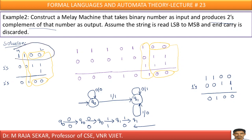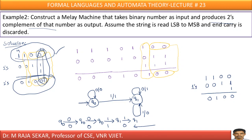Let me take a given binary number. How will you find its two's complement? If you read from least significant bit to most significant bit — if you come across zero, just keep it as it is. Again, if you come across zero, just keep it as it is. If you come across the first one, just keep that first one as it is. From here onwards, just take one's complement.